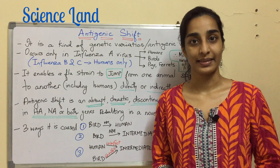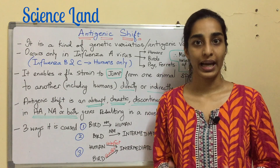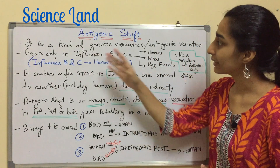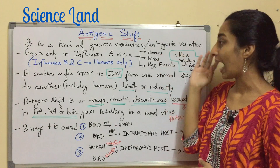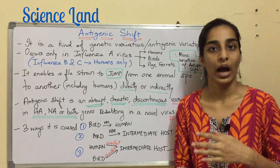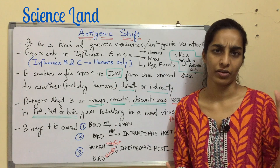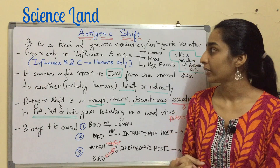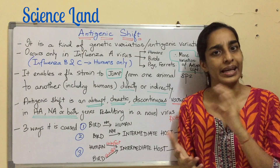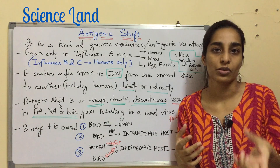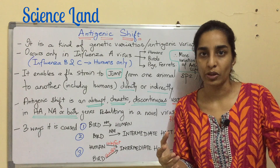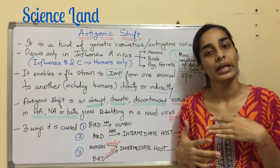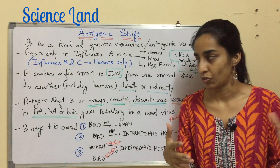Hello friends, welcome to Science Land. I am Nikita and today I'm going to talk about antigenic shift. It is a kind of genetic variation or antigenic variation. Basically, it means any variation in the sequence of the gene which determines the epitope or the antigenic determinant of an antigen is known as antigenic variation.